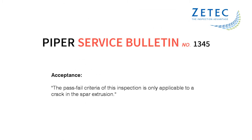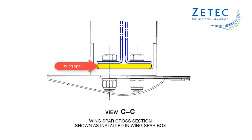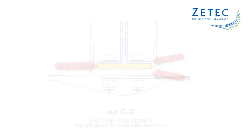The Piper Service Bulletin 1345 states that the pass-fail criteria is only applicable to the crack in the spar extrusion — this would be the center layer between the spar box and the doubler. So for this inspection, the location of any flaw must be determined. However, determining which layer an indication is located in can be quite difficult.